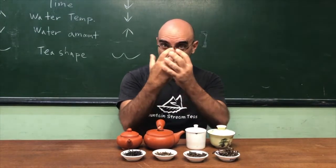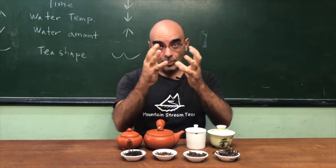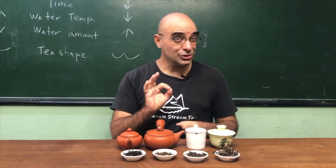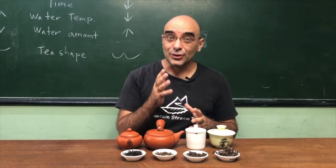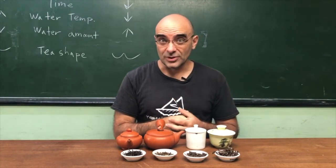Then the third steep, the whole thing opens up and as it opens up, then you're getting all of the really strong, beautiful flavors that people love about those high mountain oolongs. And that's why usually when you're using the gong fu method, the gong fu style of making high mountain oolongs, the third steep is the one that people enjoy the most.